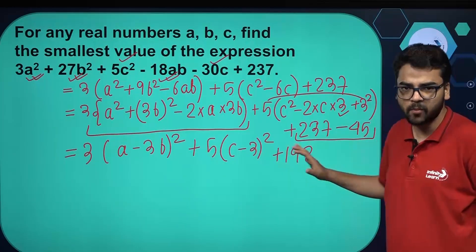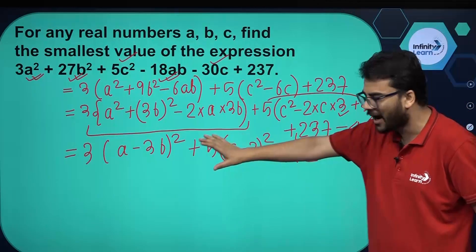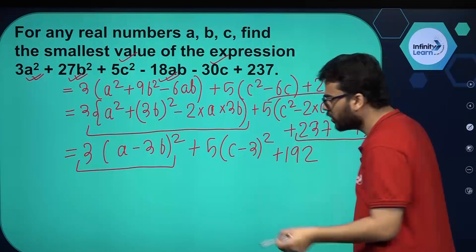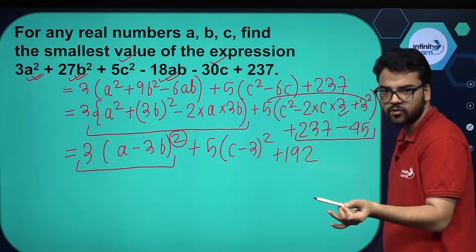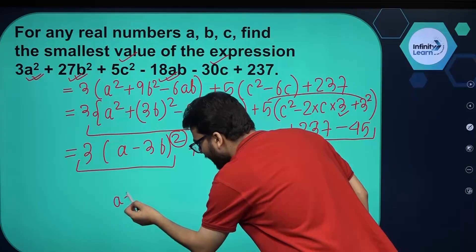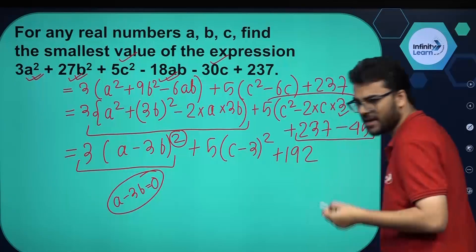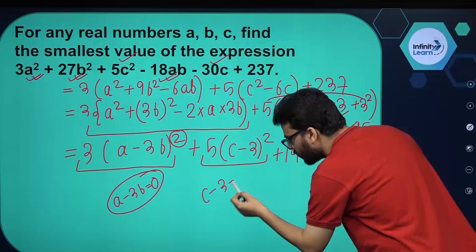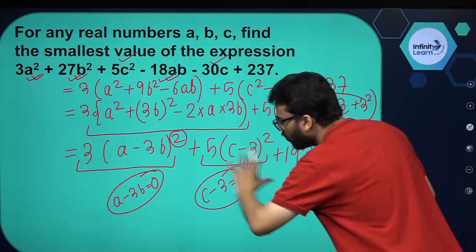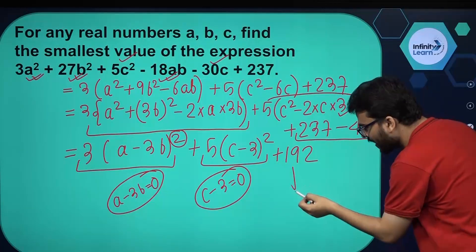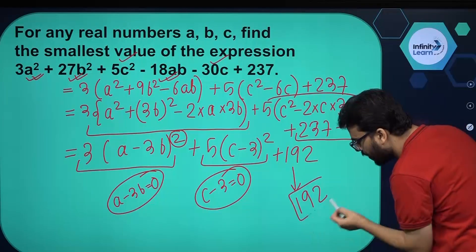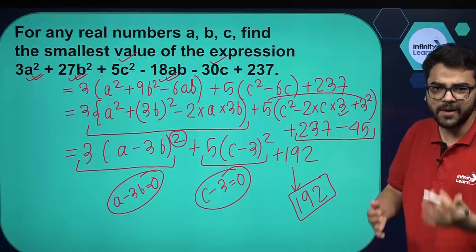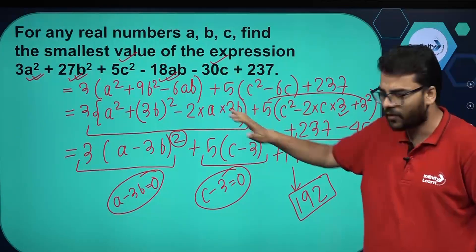We need to find the minimum value of this quadratic expression. The minimum value of (a minus 3b) squared is 0, which occurs when a minus 3b equals 0. Similarly, the minimum value of (c minus 3) squared is 0 when c minus 3 equals 0. So the minimum value of the whole expression is 192, since both squared terms equal 0 at their minimum. The minimum value of the given quadratic expression is 192.